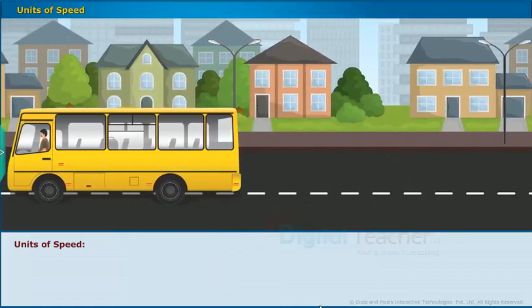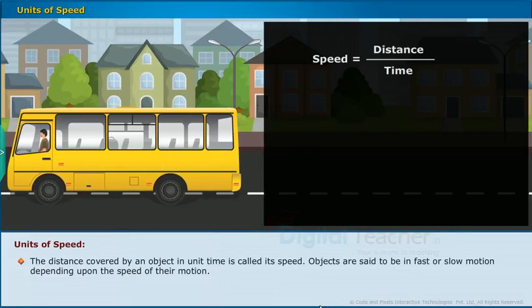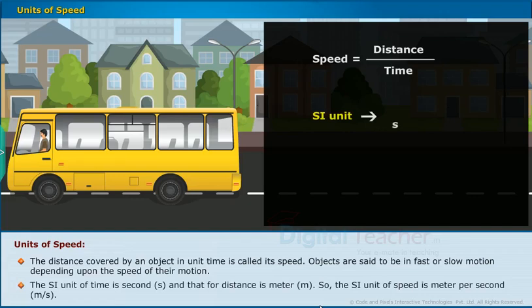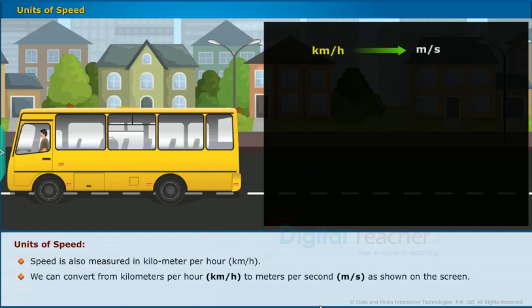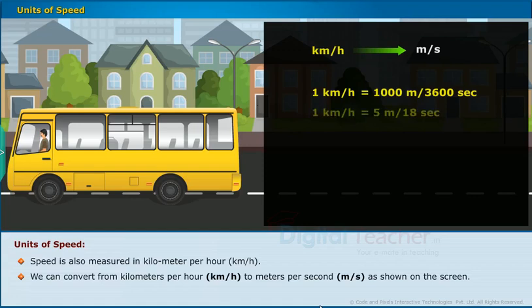Units of speed: The distance covered by an object in unit time is called its speed. Objects are said to be in fast or slow motion depending upon the speed of their motion. The SI unit of time is second and that for distance is meter. So, the SI unit of speed is meter per second. Speed is also measured in kilometer per hour which is simply written as km/h. We can convert from kilometers per hour to meters per second as shown on the screen. A kilometer has 1000 meters and an hour has 3600 seconds. So, 1 kilometer per hour is equal to 1000 meters divided by 3600 seconds, that is equal to 5/18 meters per second.